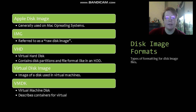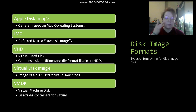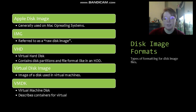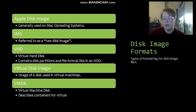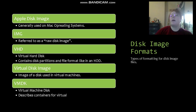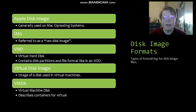Here are some disk imaging formats that our disk image tools may use. First, we have the Apple disk image, generally used on Mac operating systems. We have the IMG image, referred to as a raw disk image — the bit-by-bit stream. We have VHD, a virtual hard disk, which contains disk partitions and file format like in an HDD. We have VDI, the virtual disk image, used in virtual machines. And we have VMDK, a virtual machine disk, which describes containers for virtual machines. These are primarily the most commonly used formats you will see in the field, and if a disk imaging tool supports most of these formats, you can use disk images made with other tools on it.